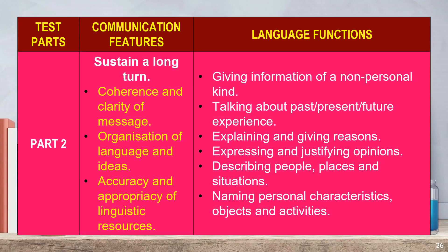In Part 2, candidates need to sustain a long-turn task. The communication features in Part 2 are clarity of message, organisation of language and ideas, and accuracy and appropriacy of linguistic resources. The language functions expected from candidates in Part 2 are giving information of a non-personal kind. Candidates should be able to talk about past, present, or future experiences by explaining and giving reasons. They should also be able to express and justify opinions, describe people, places and situations, or name personal characteristics, objects and activities based on the task given.